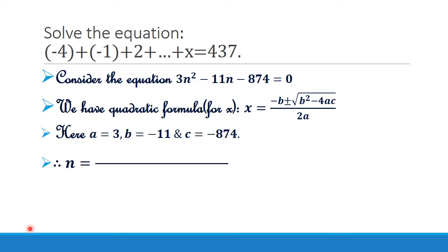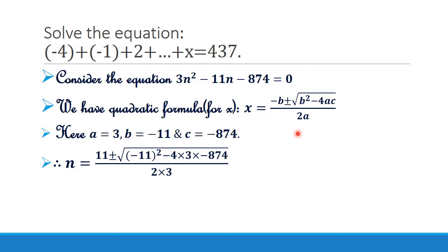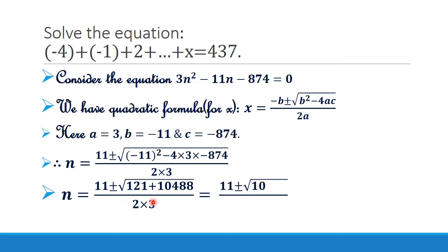Applying the formula: n equal to 11 plus or minus square root of minus 11 squared minus 4 into 3 into minus 874, whole divided by 2 into 3. That gives n equal to 11 plus or minus square root of 121 plus 10488, divided by 6, which equals 11 plus or minus square root of 10609, divided by 6, equal to 11 plus or minus 103, divided by 6.